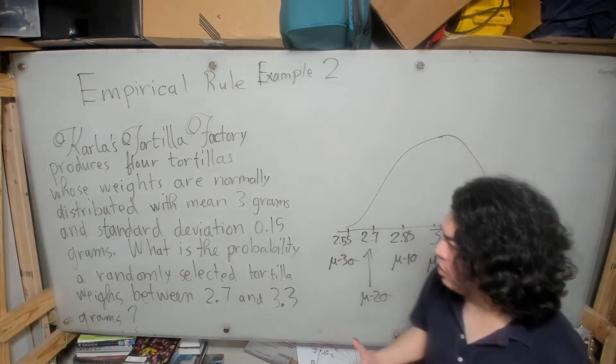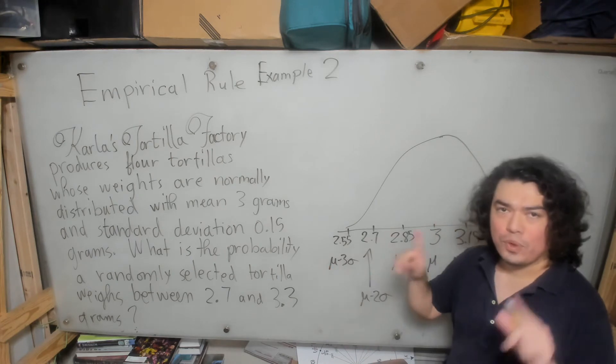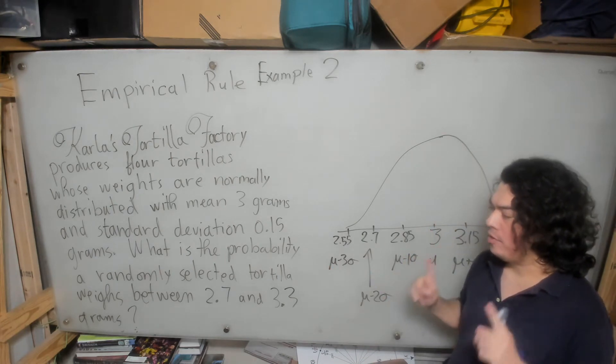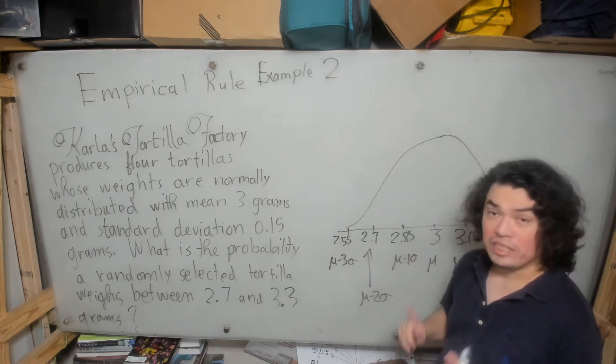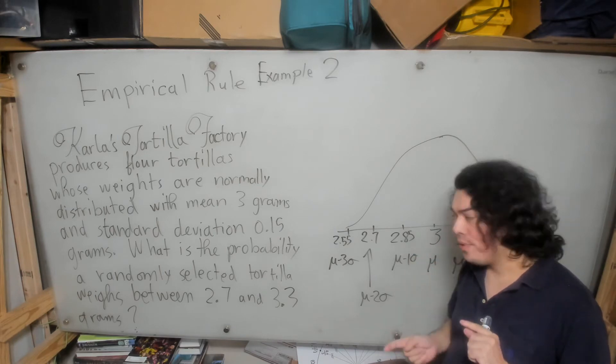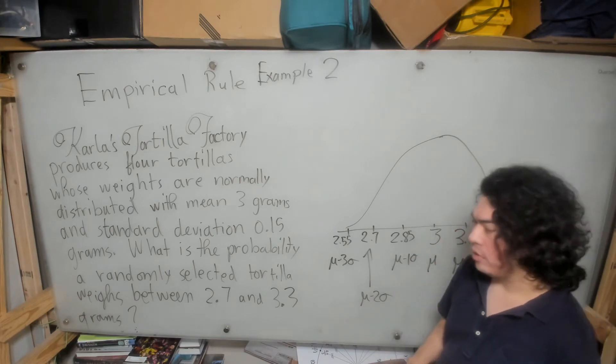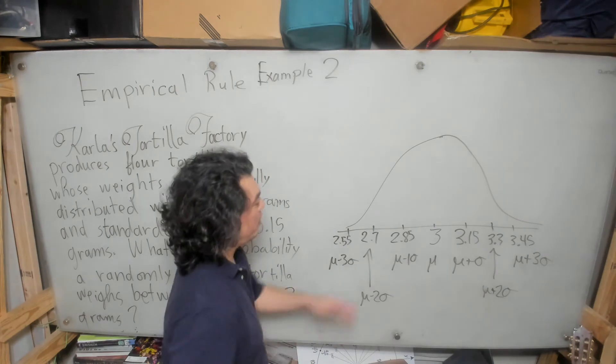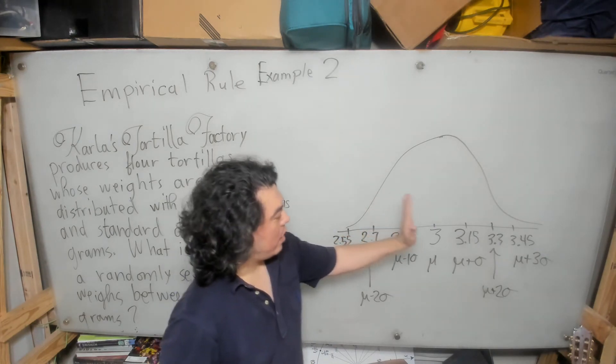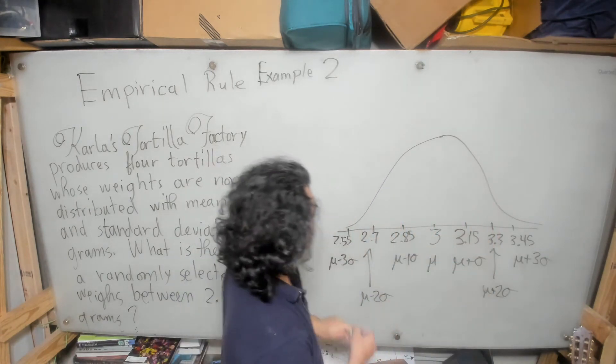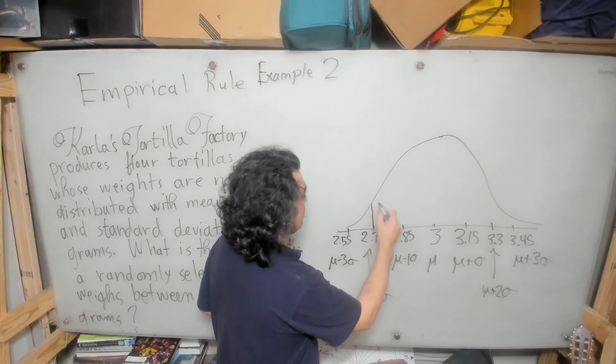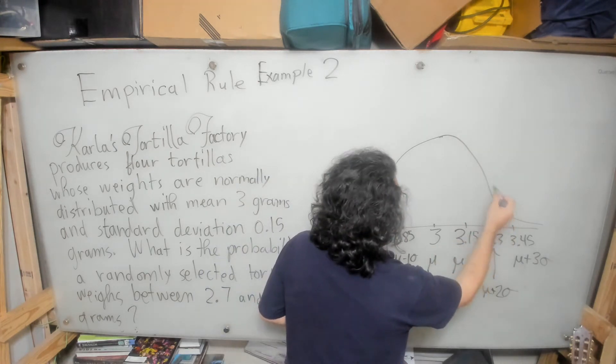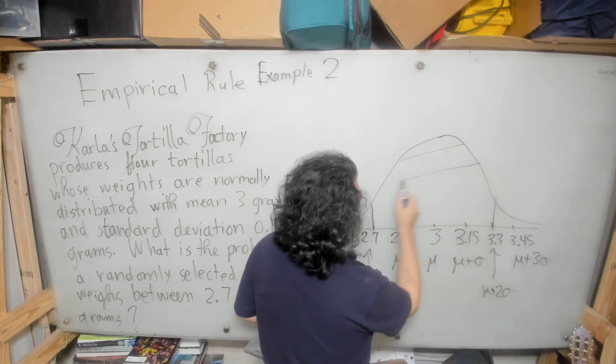Now let's read the question again. What is the probability that a randomly selected tortilla weighs between 2.7 and 3.3 grams? All right. So between. That means that if I put up these boundaries, I'm looking for this area.